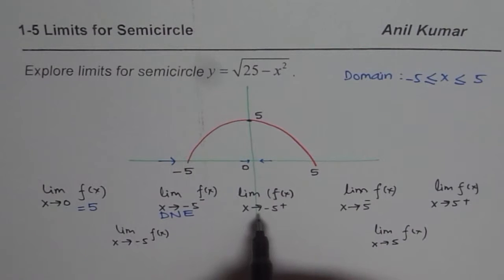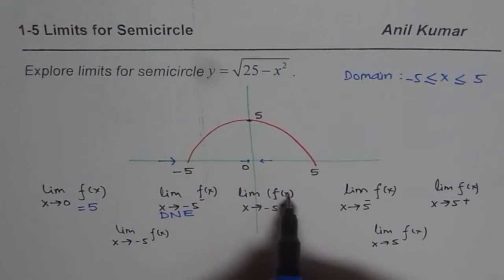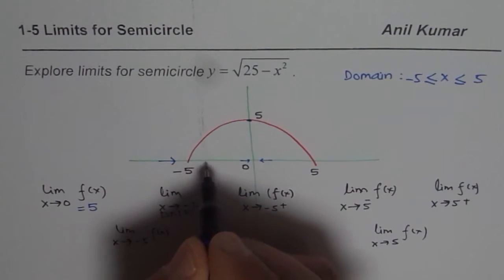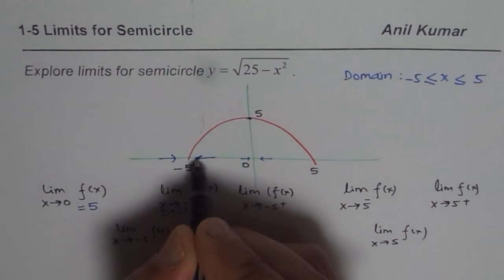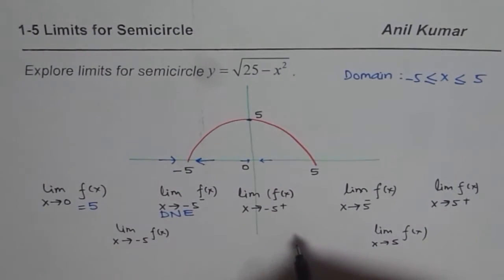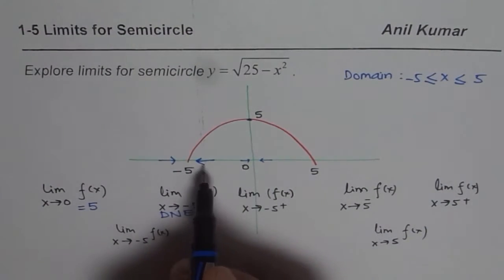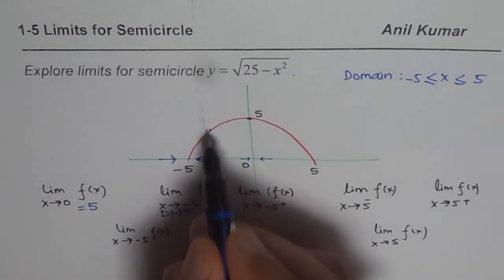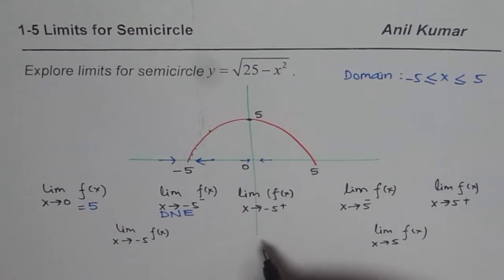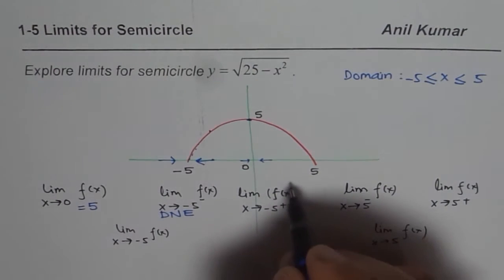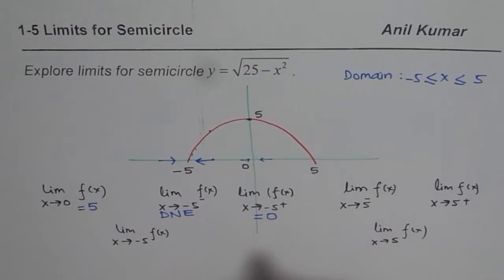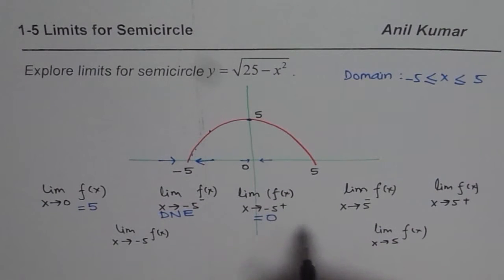Now let us answer the next question: limit of the function when you are approaching minus 5 from the right side. When you approach from this side, think you are somewhere on the graph and you are approaching a value which is 0. So this limit is equal to 0. So that limit exists.